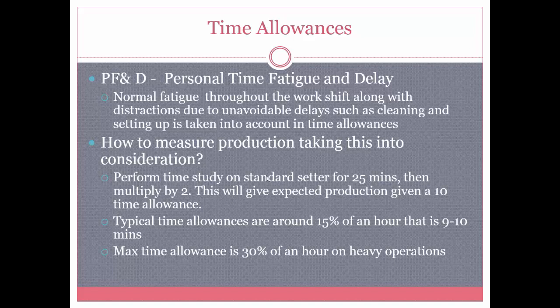You would perform a time study for 25 minutes and then multiply this by 2, which gives you the expected production given a 10-minute time allowance. The typical time allowances are around 15% of an hour, which is 9 to 10 minutes. The maximum time allowance would be 30% of an hour, which is 18 minutes, and this would only apply to heavy operations. Usually most manufacturing production processes give the operator a 9 to 10-minute time allowance.